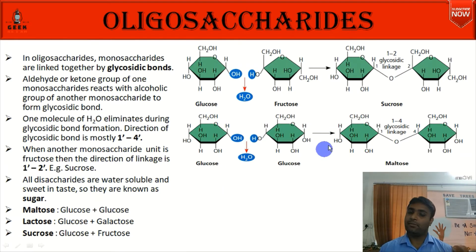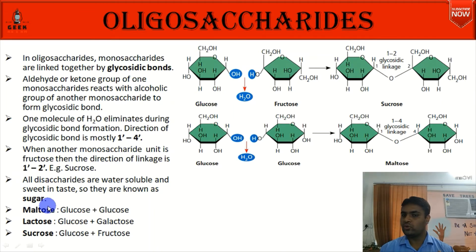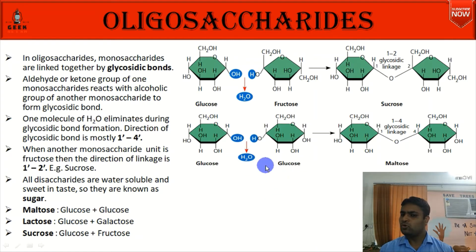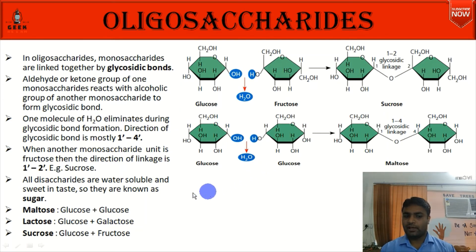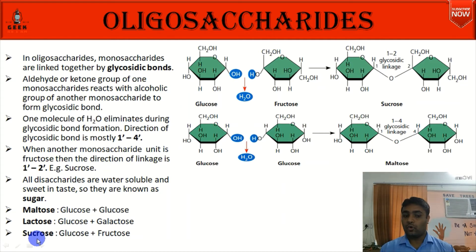All disaccharides are water soluble and sweet in taste, so they are called sugars. Maltose is a disaccharide formed from glucose + glucose with 1,4 glycosidic linkage. Lactose is formed from glucose + galactose. Sucrose is formed from glucose + fructose. So sucrose, lactose, and maltose are all disaccharides.